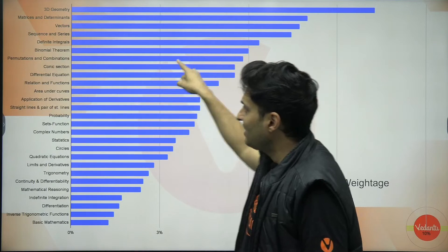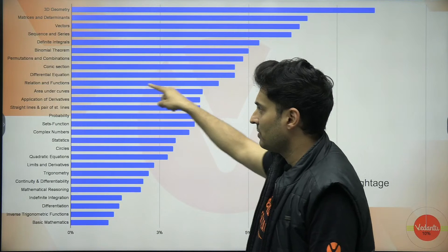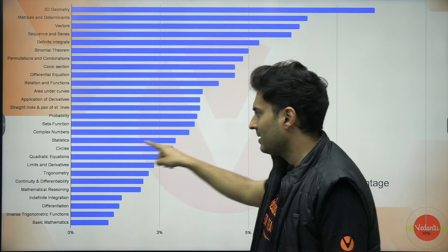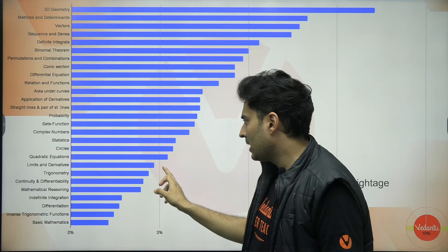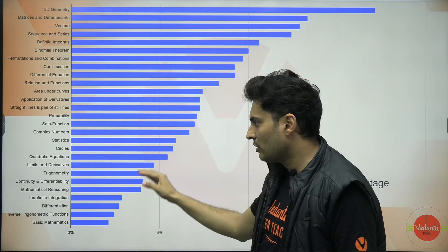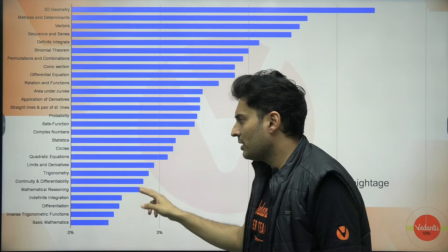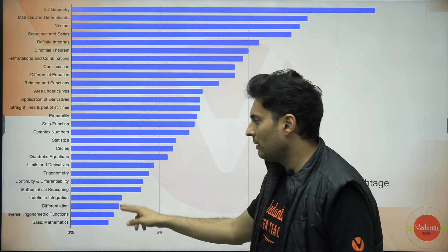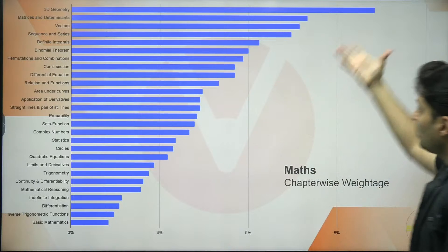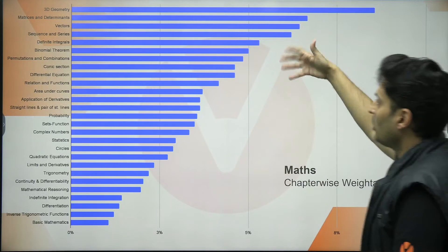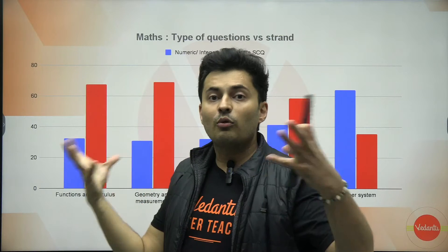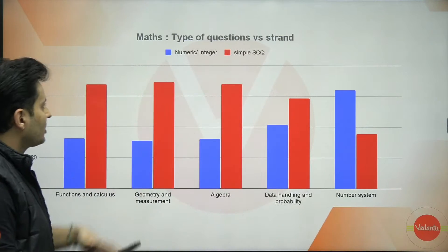Other important medium-weightage chapters include: binomial theorem, permutations and combinations, conic sections, differential equations, relations and functions, area under the curve, application of derivatives, pair of straight lines, probability, sets, complex numbers, statistics, circles, and quadratic equations. Low weightage chapters include: limits and derivatives, trigonometry, continuity and differentiability, mathematical reasoning, indefinite integration, differentiation, inverse trigonometric functions, and basic maths. This tells you which chapters to prioritize and which to treat as optional based on your strengths.